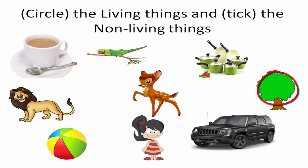Jeep — jeep is a non-living thing, we tick on non-living thing. Girl is a living thing, we circle on the living thing.